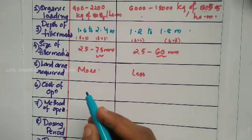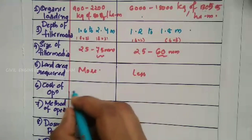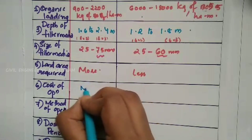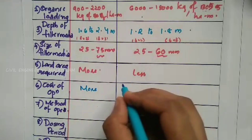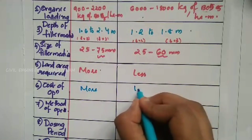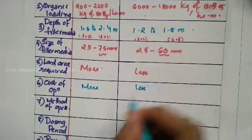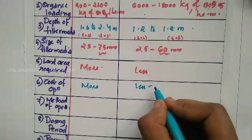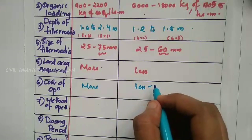Next is cost of operation. The cost for low rate is lower. The cost for high rate is less in terms of operation because advanced technologies are used, making the operation cost a little less.